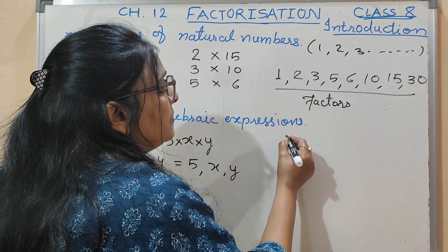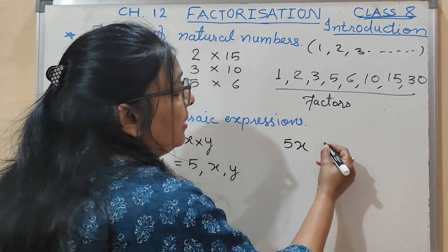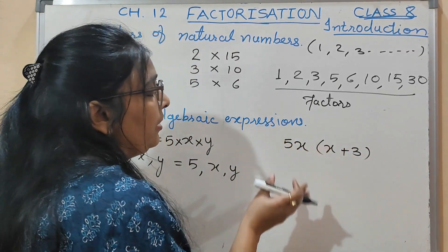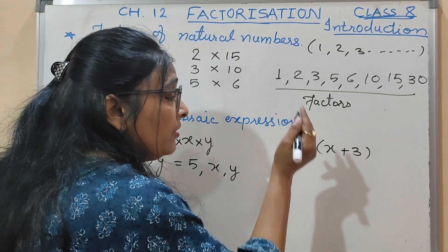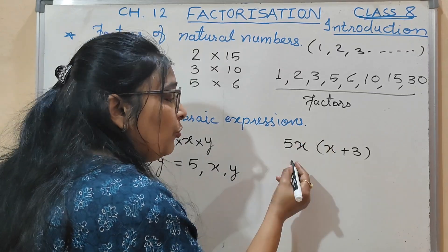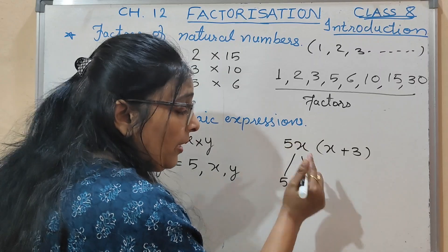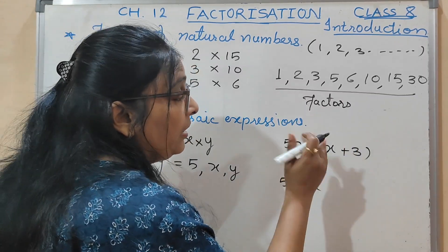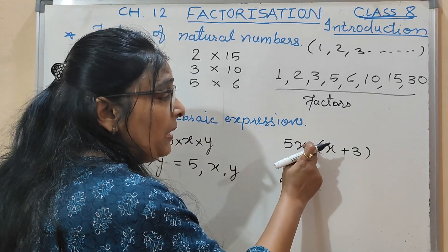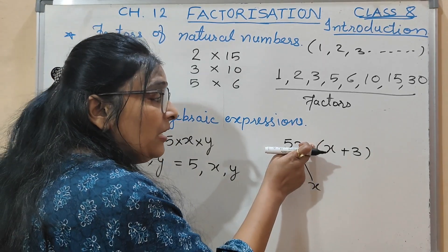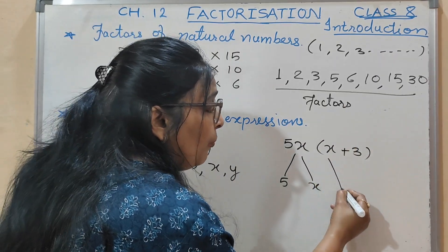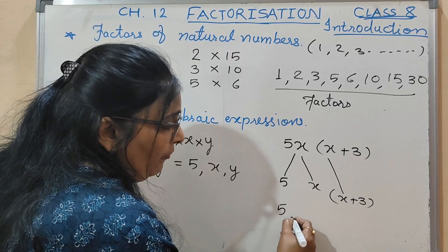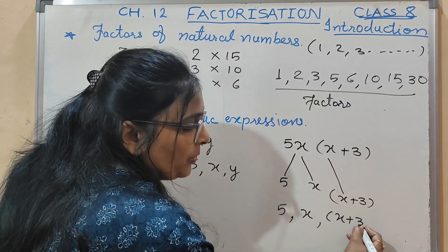Now if I take the algebraic expression 5x in bracket (x plus 3), here you can write 5 into x into (x plus 3). This is a bracket and the middle sign is multiplication — 5x is multiplied to the whole bracket. Therefore the whole bracket (x plus 3) is a factor. So the factors you get here are 5x and (x plus 3).